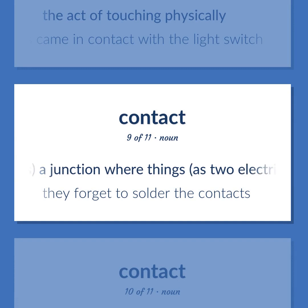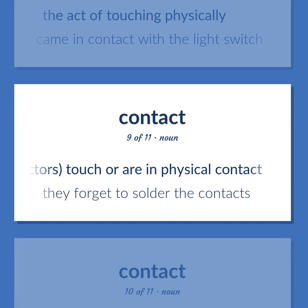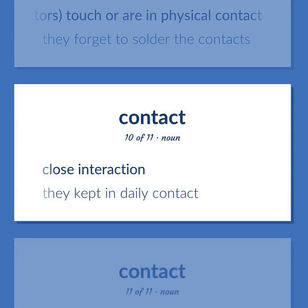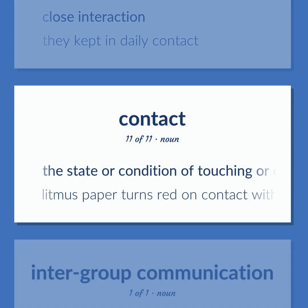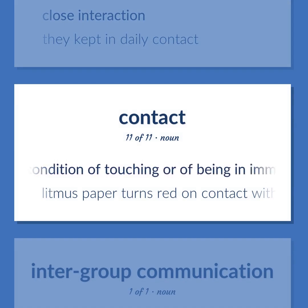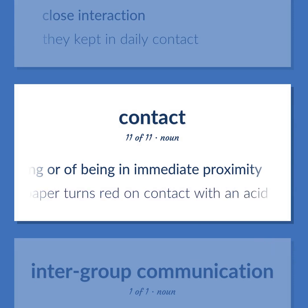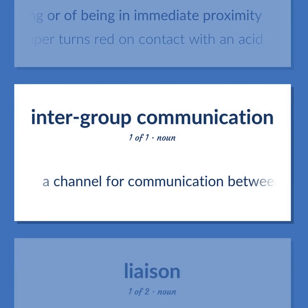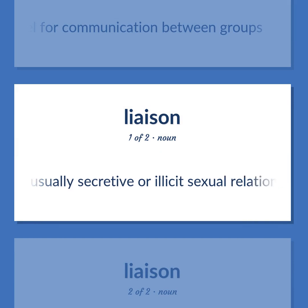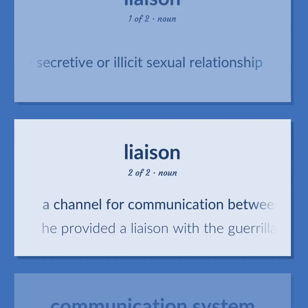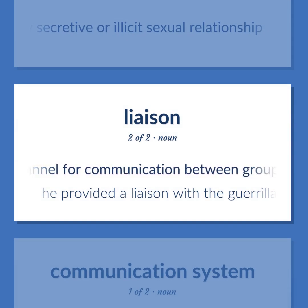Electronics: a junction where things, as two electrical conductors, touch or are in physical contact. They forgot to solder the contacts. Close interaction. They kept in daily contact. The state or condition of touching or of being in immediate proximity. Litmus paper turns red on contact with an acid. Liaison. A channel for communication between groups. A usually secretive or illicit sexual relationship. A channel for communication between groups. He provided a liaison with the guerrillas.